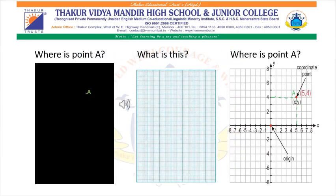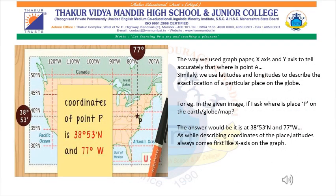Suppose I am showing you a paper with point A plotted on it and ask you where is point A — it will be difficult for you to answer. But if I plot point A on a graph paper and ask you where it is, you can answer: it is at 5 units on the x-axis and 4 units on the y-axis. The same way we use x-axis and y-axis to describe a point on graph paper, we use latitudes and longitudes to locate a particular place on the globe.